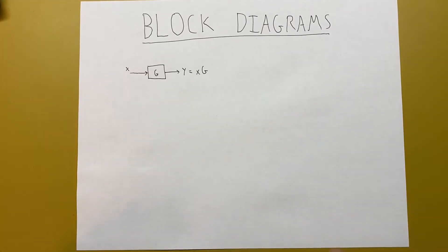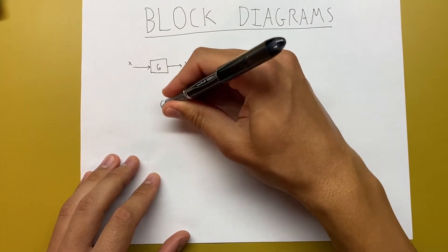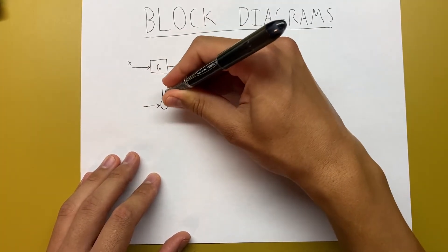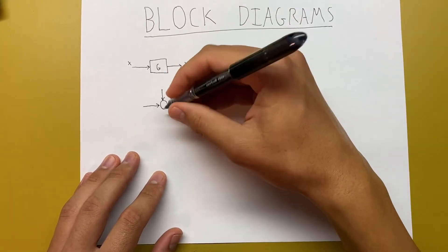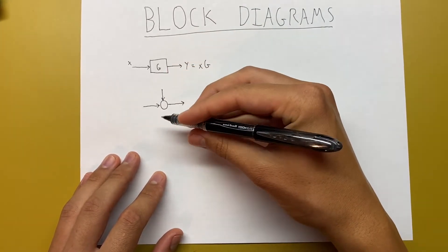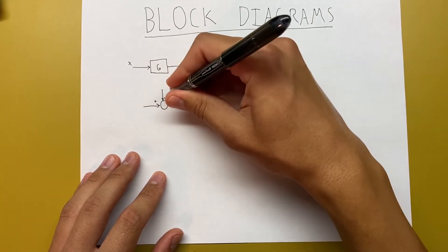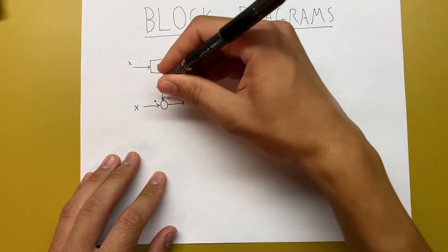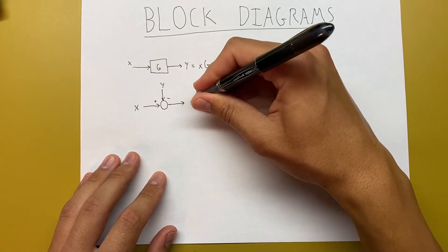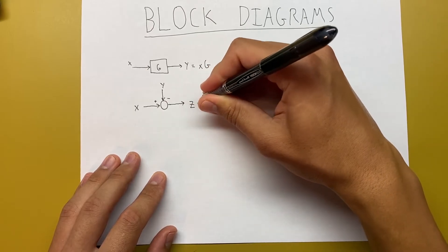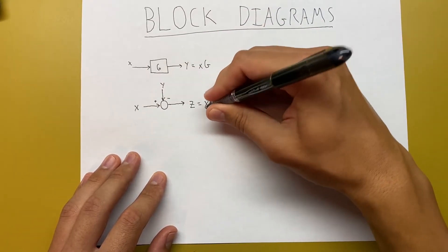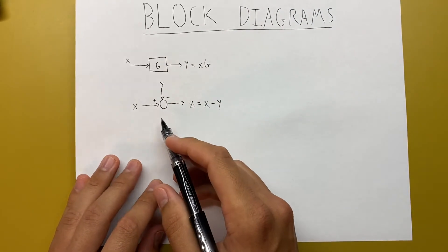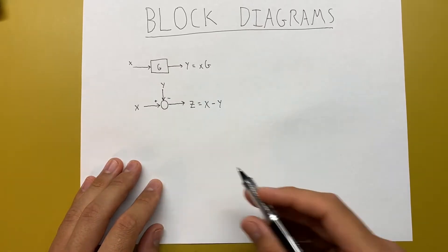Another component we're going to be looking at is a summing junction, represented as a circle. We can have an input signal here, maybe another one here, and an output signal here. You always have to label the input signals as positive or negative. So if this is input signal x, input signal y, and output signal z, then z equals positive x plus negative y. You just sum the signals using whatever signs are shown.